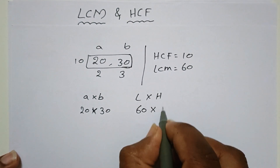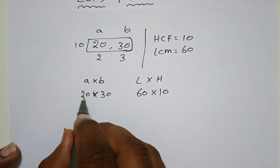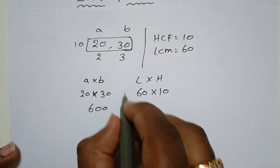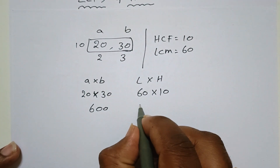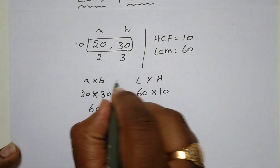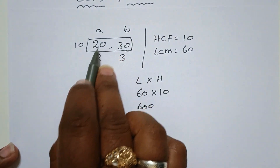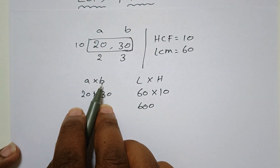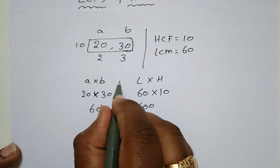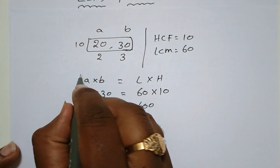LCM is 60 and HCF is 10. So 20 multiplied by 30 equals 60. The relationship A into B equals LCM into HCF is the same. This formula connects the two numbers with their LCM and HCF.